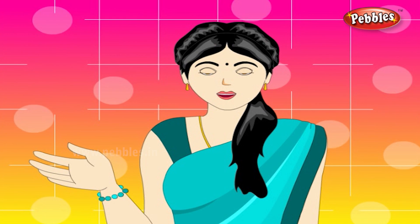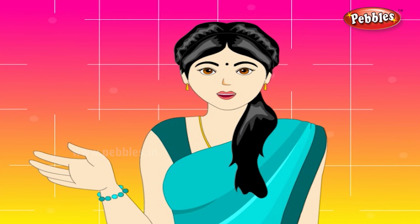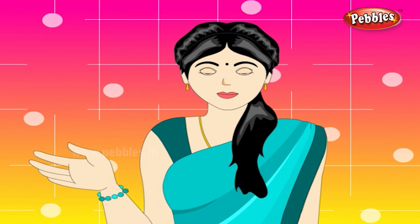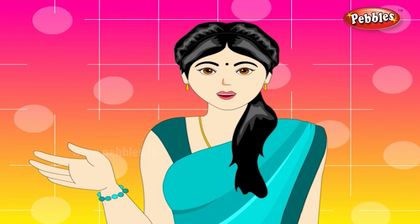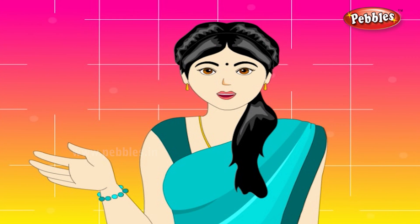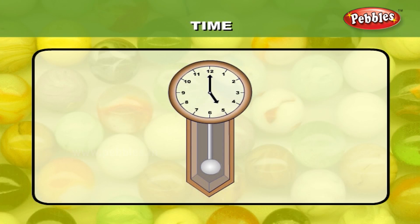Let us learn about a clock. The clock shows us the time of the day. Look at this clock. What do you see in the clock? Numbers from 1 to 12 and two hands pointing to the numbers.